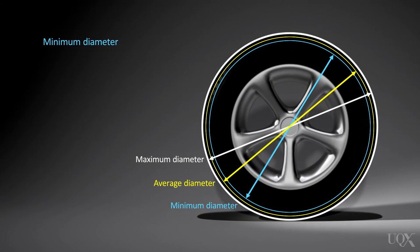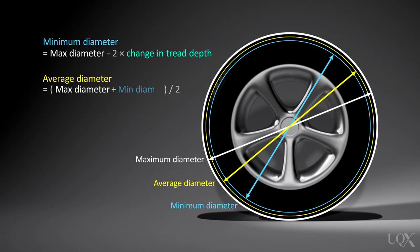The minimum diameter is the maximum diameter less twice the change in tread depth. The average diameter is half the sum of the maximum diameter and the minimum diameter.